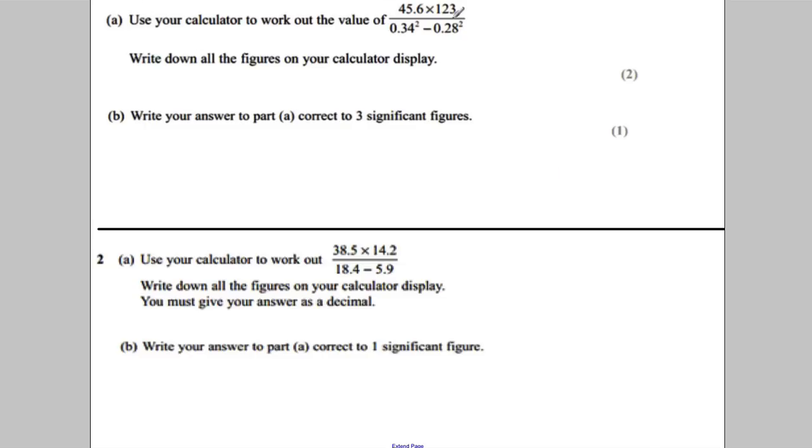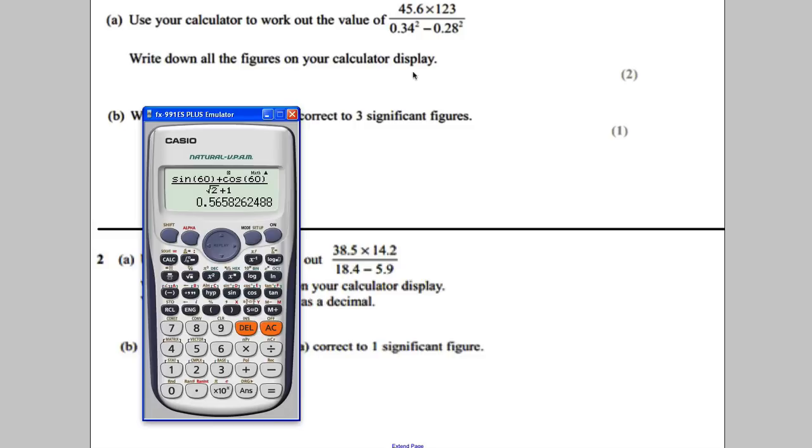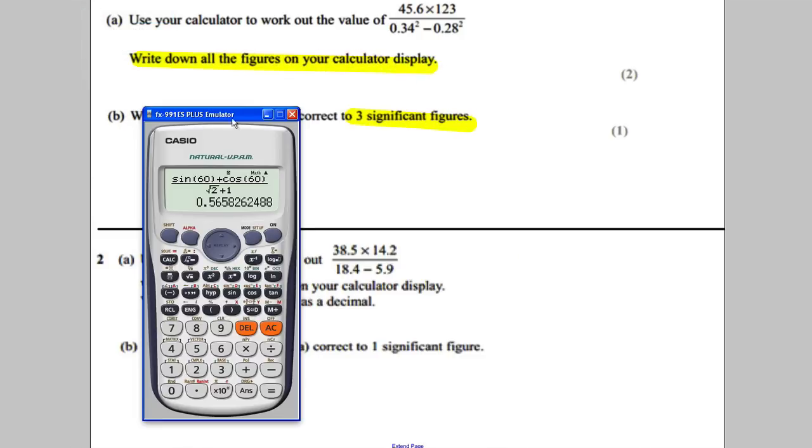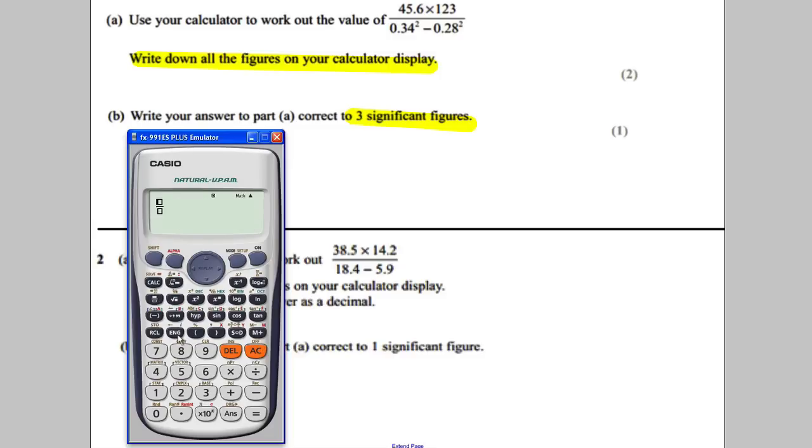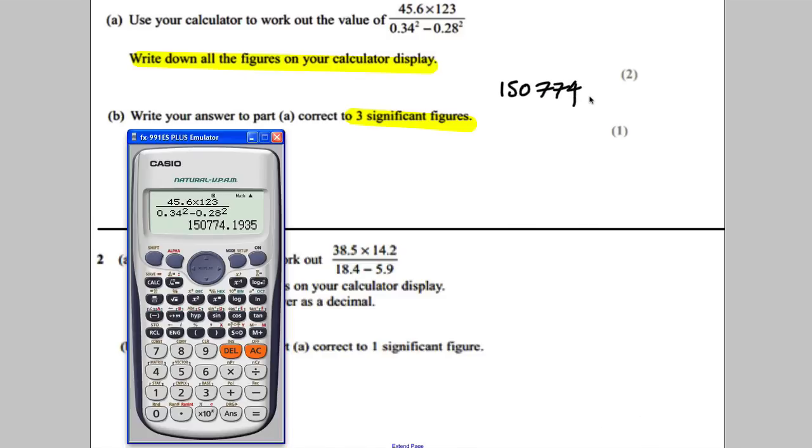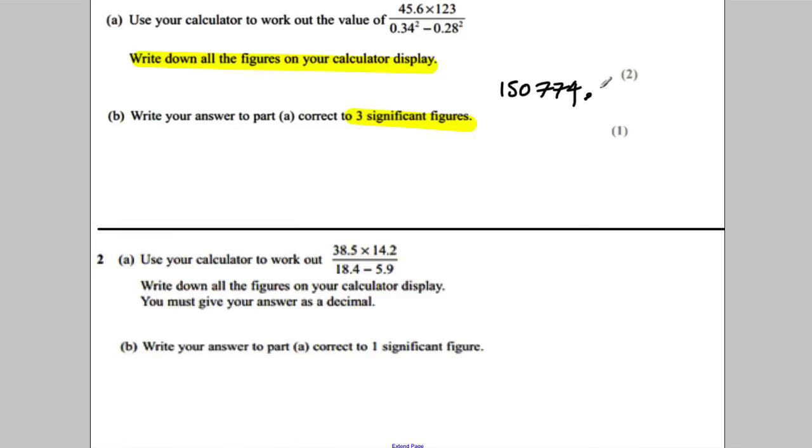Okay, for the first one, you have to type this and write down all the figures for part A. It says write all the figures of your answer down, and then it says round it to three significant figures for part B. So press the fraction button. You want to press 45.6 multiply by 123, down, 0.34 squared, subtract 0.28 squared, and press equals. You get this answer here. So you're going to write it all down because it asks you to. So 150774.01935.